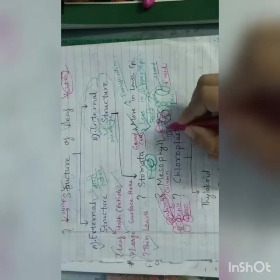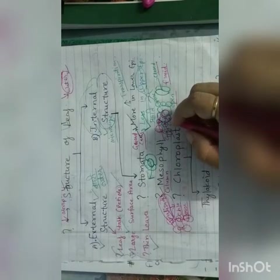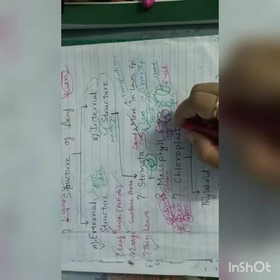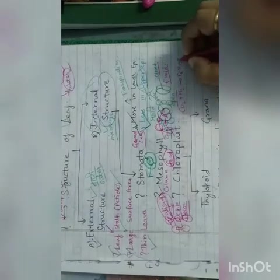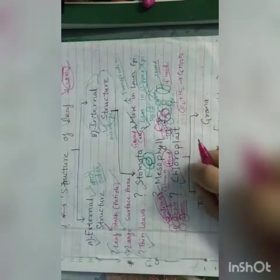Stomata opens when guard cells swell by absorbing water. The veins supply water and the food is made. In photosynthesis, water and carbon dioxide combine to make glucose. This is a basic overview of mesophyll cells and stomata function. Now we come to chloroplast.